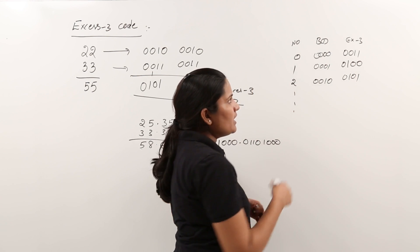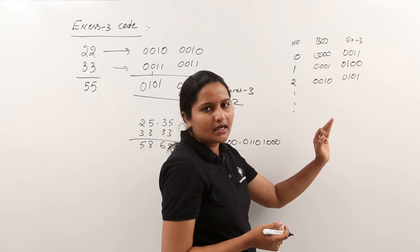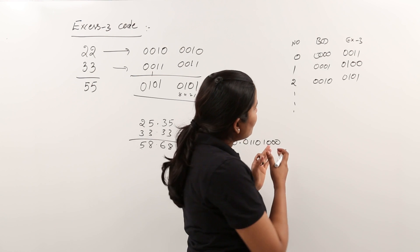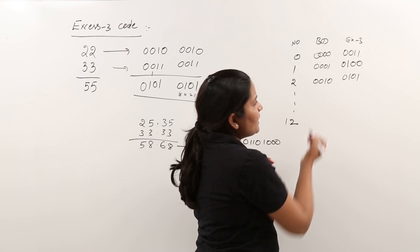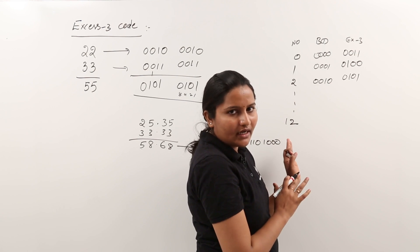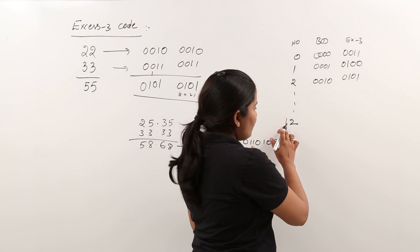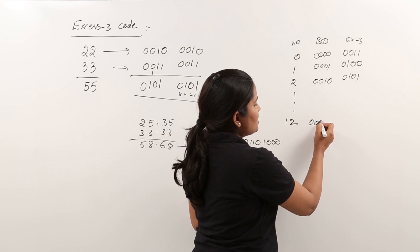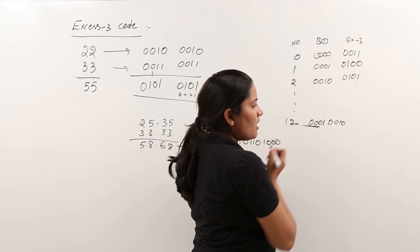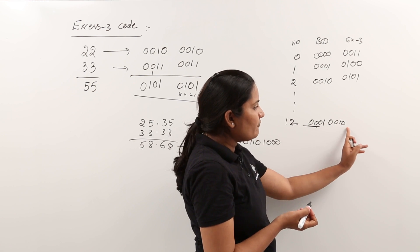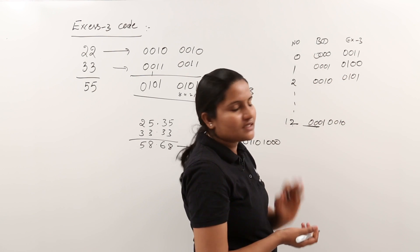So like that we can write any number in XS3 code from BCD. For example, if you want to write 12 in BCD, can you write 12? Yes you can write 12, but you need to take minimum of 5 digits. For 1 you need to take 0001. For 2 you need to take 0010. A minimum of 5 digits is required to represent 12 in BCD.